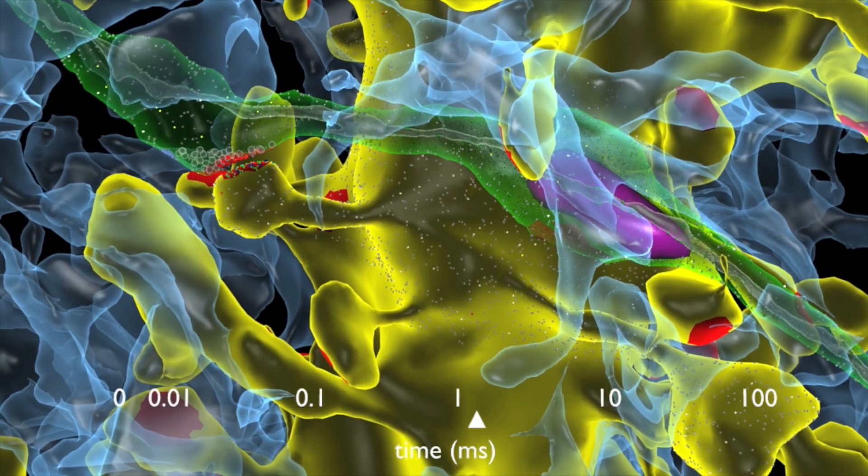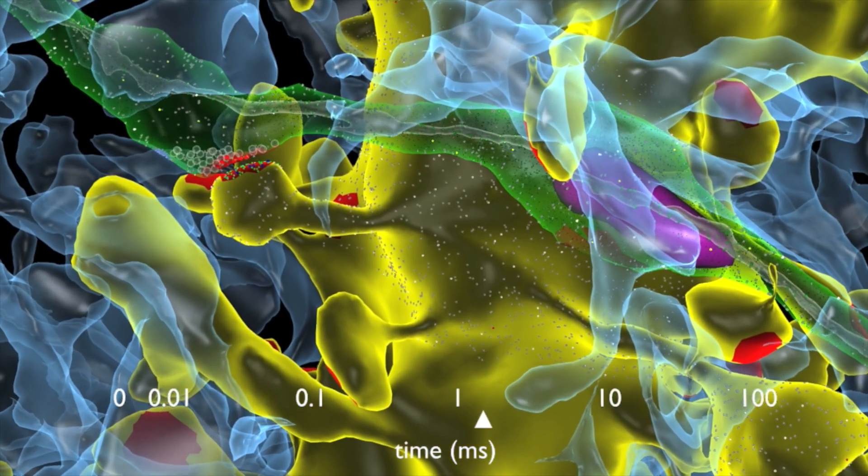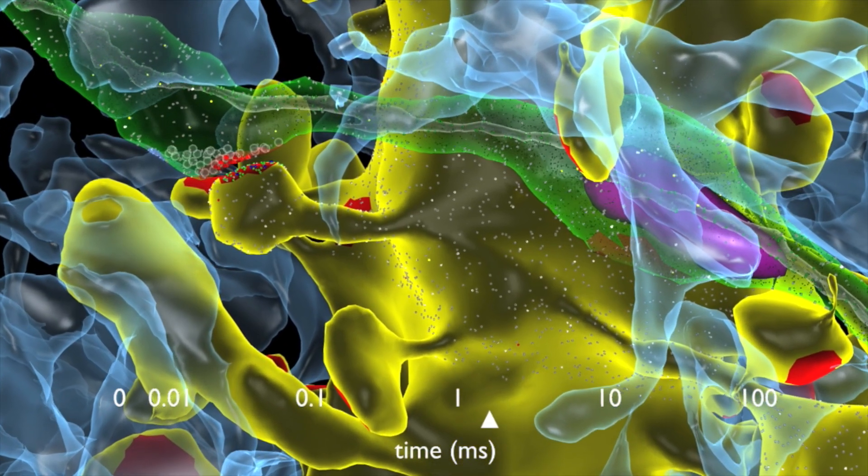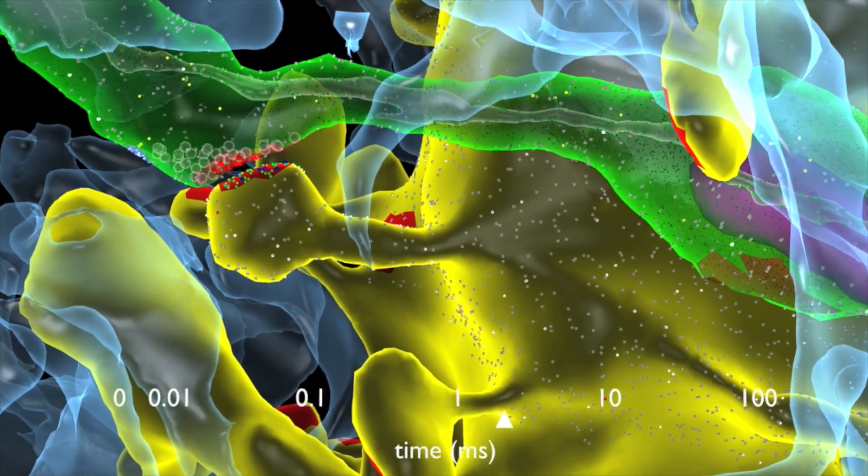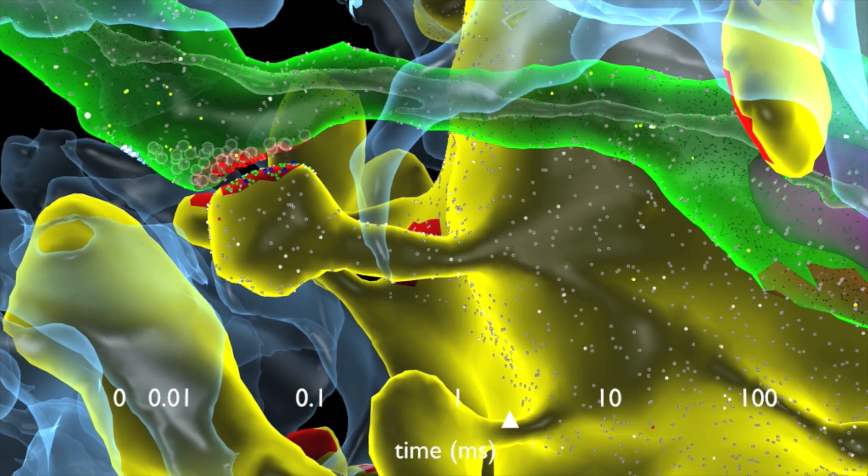Many proteins, as well as calcium, are involved in sending a signal from one neuron to another. Calcium ions, shown by moving yellow particles, are essential for cell signaling.